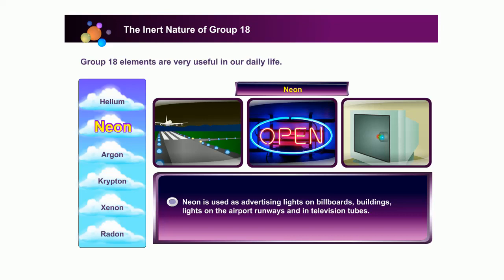Neon is used as advertising lights on billboards in buildings. It is also used to light airport runways. Other than that, neon is also used in television tubes.